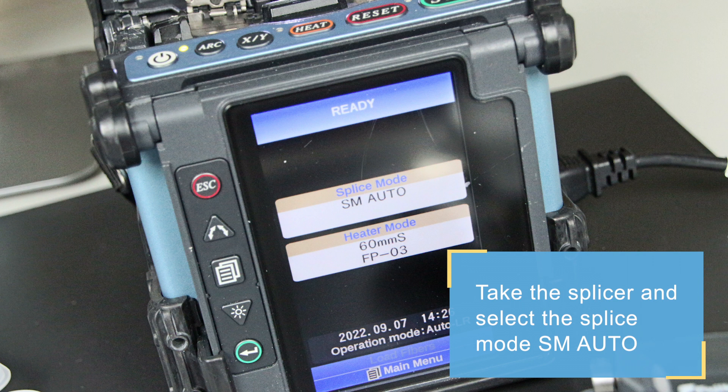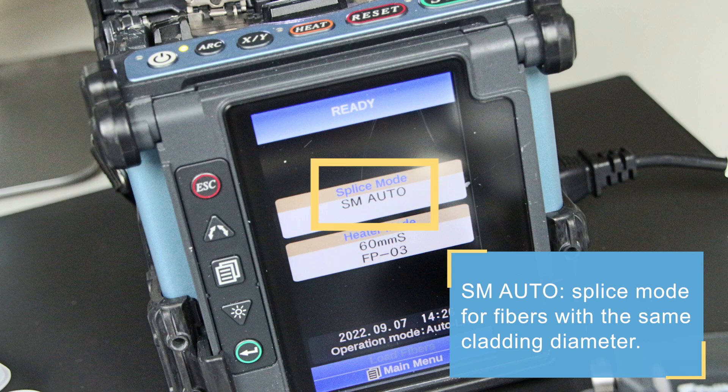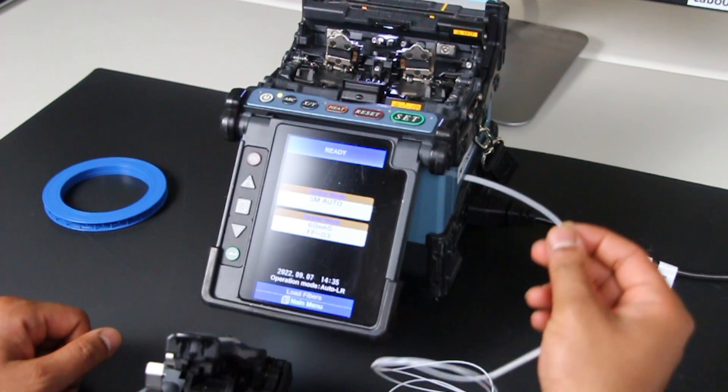Next, take the splicer and select the splicing mode, SM-AUTO. SM-AUTO is the right mode to splice fibers having the same cladding diameter.